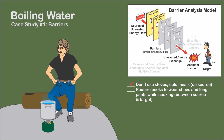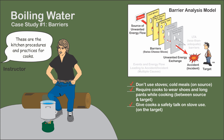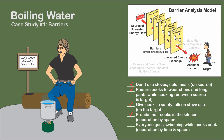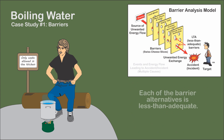Wearing shoes and long pants while cooking in the kitchen would be considered hard barriers placed between the boiling water and the skin. Requiring cooks to wear them is a soft barrier. Giving cooks a safety talk on stove use is a soft barrier on the target. Prohibiting non-cooks in the kitchen is a soft barrier that separates other potential targets from the energy source by space. Conducting another activity while cooks are cooking separates targets by both time and space. Each barrier alternative is less than adequate — boiling water can work through wet pants, safety talks can be ignored, and kitchen rules can also be ignored.